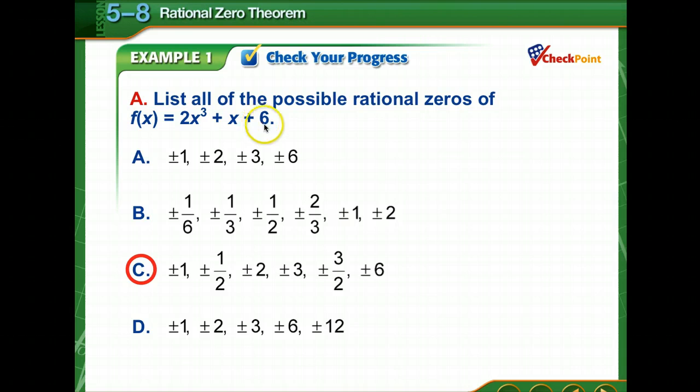Here we have 1, 2, 3, and 6, and here we have 1 and 2. So if we put all of our possibilities together, c is our answer.